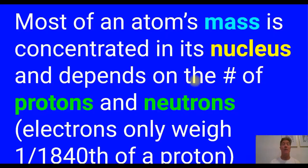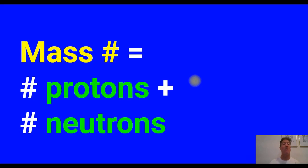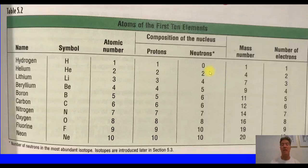This takes us to mass number. Most of an atom's mass, as Rutherford told us, is concentrated in its nucleus and depends on the number of protons and neutrons. The weight of the electrons is about one two-thousandth that of a proton, so we can essentially ignore them for determining the atom's mass. Virtually all of the mass is determined by the number of protons and neutrons combined — and they both weigh about the same. So the mass number is simply proton number plus neutron number. For example, helium has atomic number two — two protons, two neutrons — giving us a mass number of four. Lithium has three protons and four neutrons, for a mass number of seven.